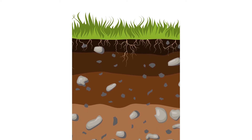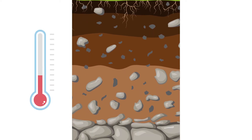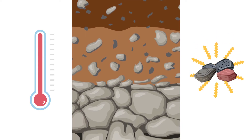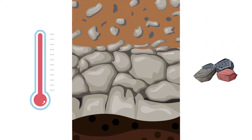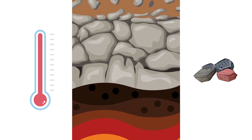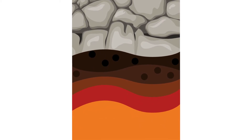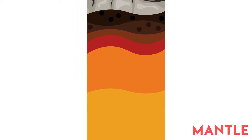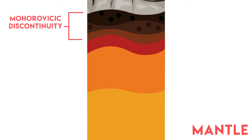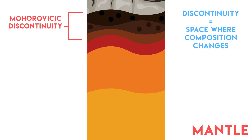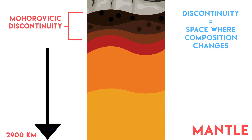As we go deeper and deeper, temperature and pressure both increase and thus solid rocks start becoming liquid. The next layer of earth after crust is called the mantle, and the boundary which separates these two layers is called the Mohorovičić discontinuity. Discontinuity is the space where the composition of the interior of earth changes. Mantle spans till 2900 km deep.